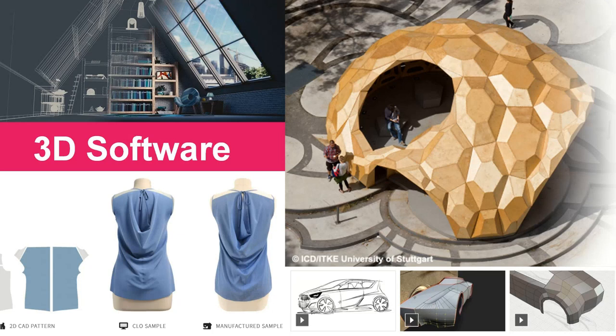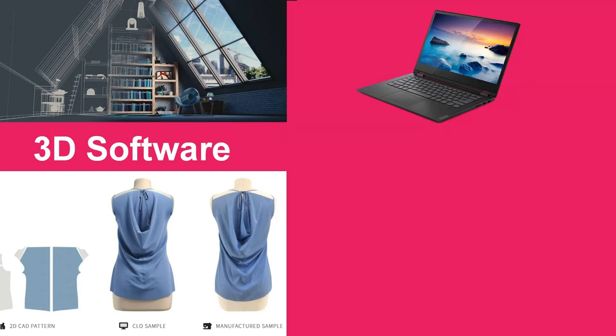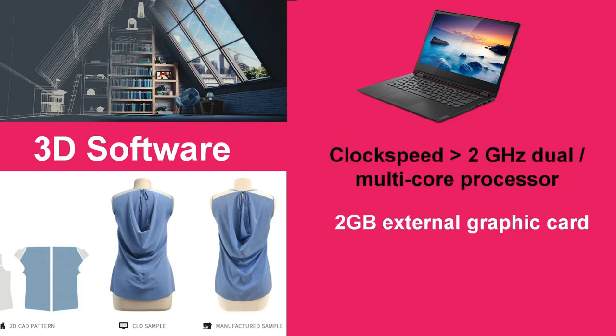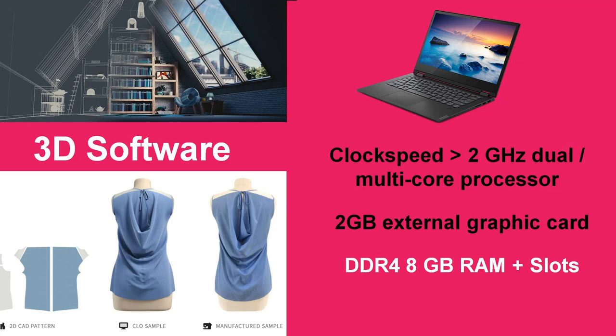Then ensure the following minimum specifications are available. These are the minimum — if you can get higher, the better. Number one: a clock speed of at least 2 GHz with a dual or multi-core processor. Number two: an external graphics card of at least 2 GB. Number three: DDR4 8 GB RAM with additional memory expansion slots to extend memory — consider at least two additional slots that can support 8 or 16 GB RAM individually.